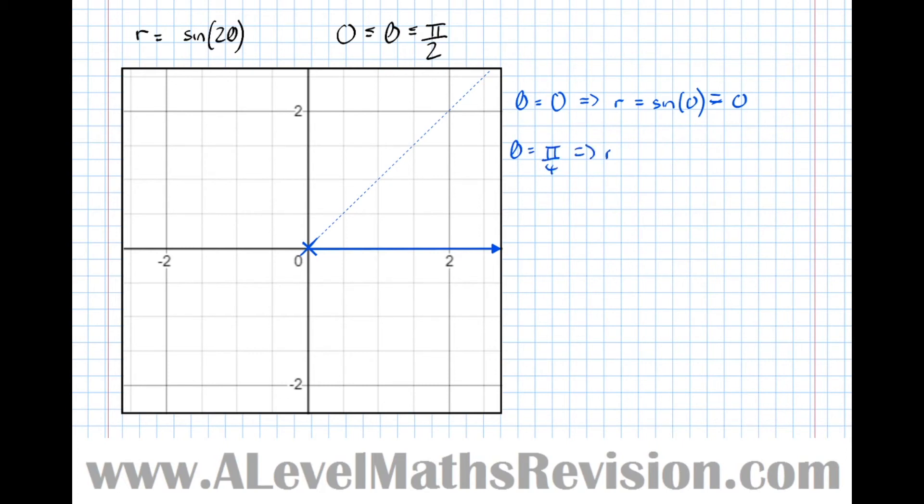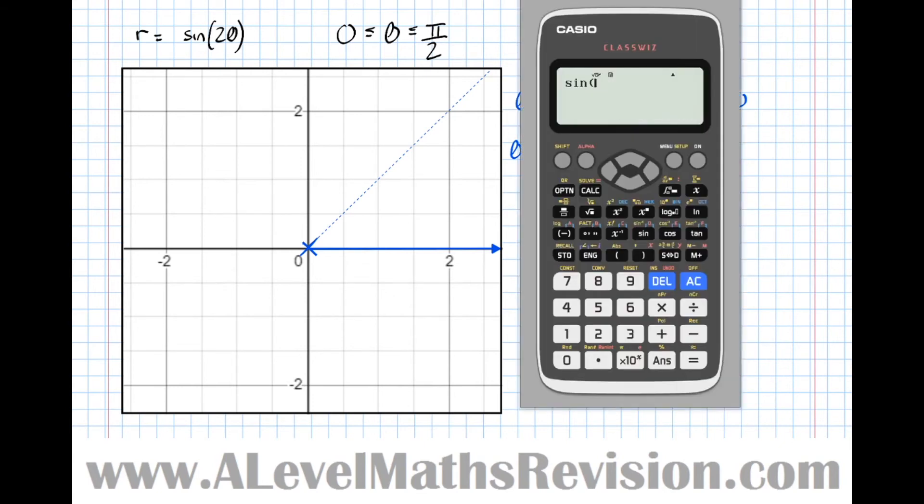So theta equals pi over 4, which means that the distance from the origin is sine of 2 pi over 4, which is sine of pi over 2—should know this but just being completely safe as pressure gets to people in an exam—which is 1.